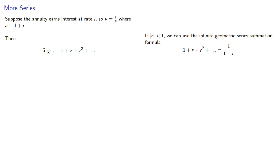The important thing to remember is that this infinite series is only equal to this nice simple expression if the absolute value of that common ratio is strictly less than one. Since v is the reciprocal of one plus i, and generally we'll assume that i is positive, then the absolute value of v will be less than one.